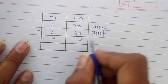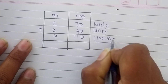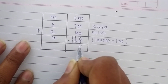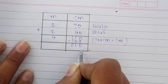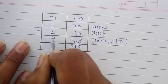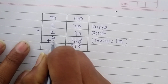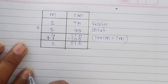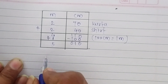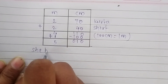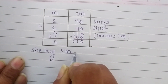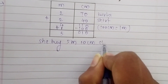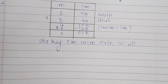Here we have 110 cm, and we know that 100 cm equals 1 meter. So we subtract 100 from the centimeter column, leaving 10 cm there, and add 1 to the meter column. So 4 plus 1 is 5. She bought 5 meter and 10 cm of cloth in all.